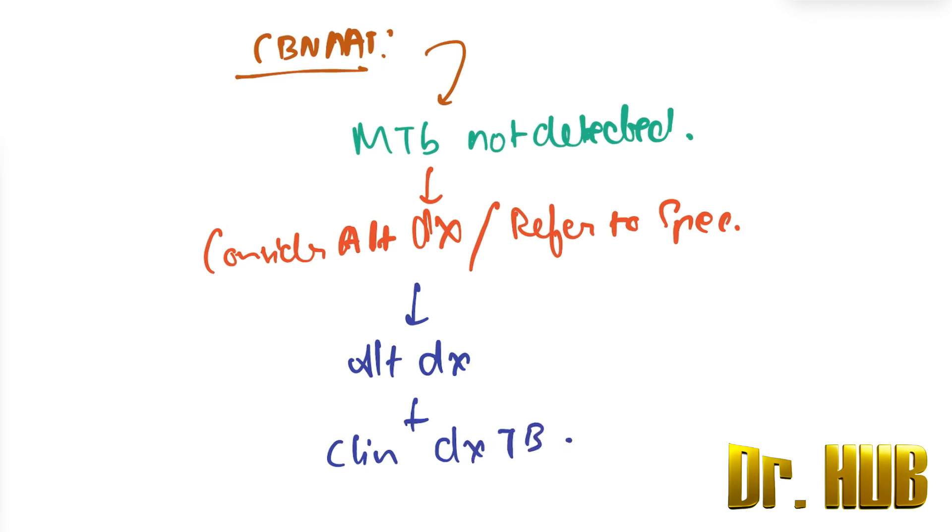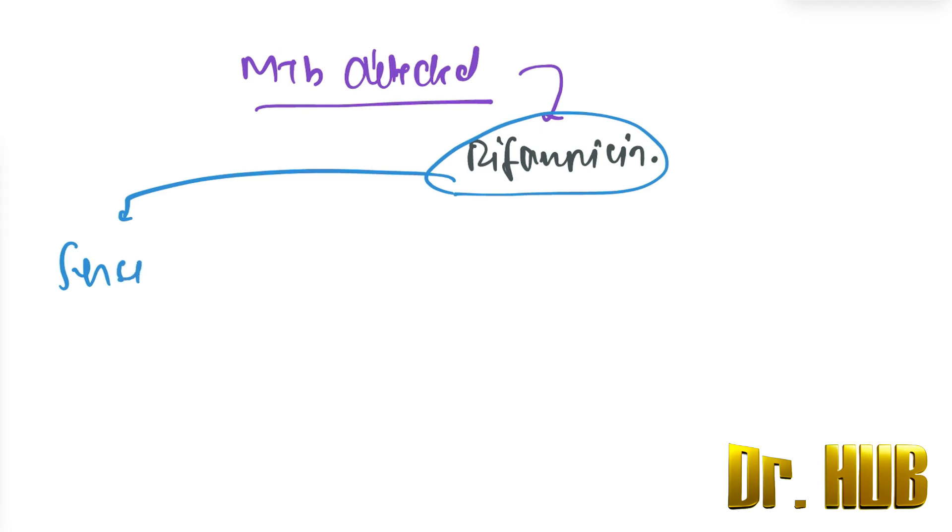Next, if MTB is detected, then next will be the use of rifampicin. In case of rifampicin, we have three criteria. If it is sensitive, this means microbiologically confirmed TB.